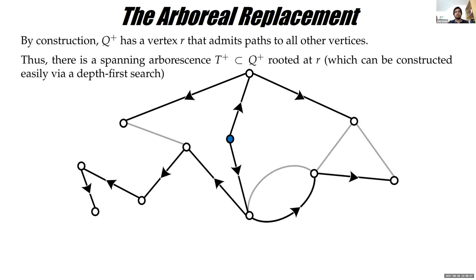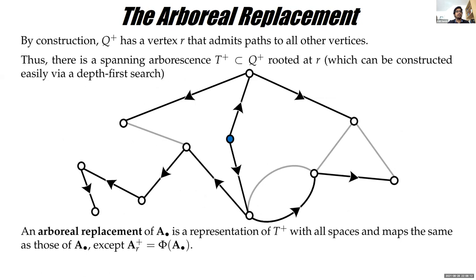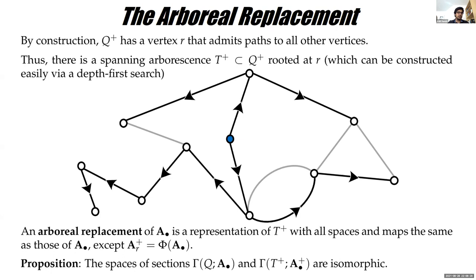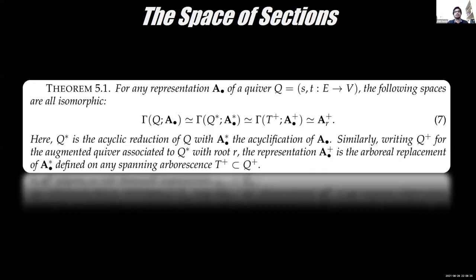Putting all these propositions together gives the main result: for any quiver, the original section space, the section space after acyclic reduction (removing all cycles), and the section space of the spanning arborescence restricted to the root — all of these coincide. So we can replace any quiver with a spanning tree and just look at the root.